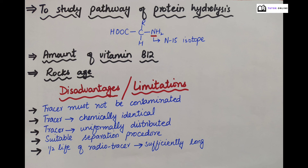However, IDA has the following limitations: The radioactive tracer must be radiochemically pure, meaning it must not be contaminated with any other radioisotope. The radiotracer must be chemically identical to the analyte, i.e., it must be in the same ionic or covalent form. The radiotracer must be uniformly distributed in the sample, meaning the mixture should be stirred thoroughly. A suitable separation procedure must be developed before handling to isolate components in pure form. The half-life of the radiotracer must be sufficiently long so that chemical separation remains feasible.